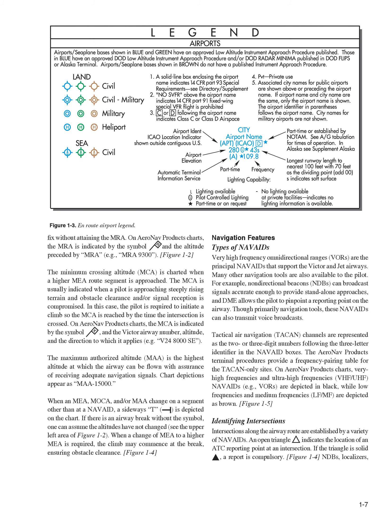Navigation features: types of NAVAIDs. Very high-frequency omnidirectional ranges, VORs, are the principal NAVAIDs that support the Victor and Jet Airways. Many other navigation tools are also available to the pilot. For example, non-directional beacons, NDBs, can broadcast signals accurate enough to provide stand-alone approaches, and DME allows the pilot to pinpoint a reporting point on the airway. Though primarily navigation tools, these NAVAIDs can also transmit voice broadcasts. Tactical Air Navigation, TACAN, channels are represented as the two- or three-digit numbers following the three-letter identifier in the NAVAID boxes. On AeroNav Products charts, VHF-UHF NAVAIDs, for example VORs, are depicted in black, while low-frequency and medium-frequency, LF/MF, are depicted as brown.